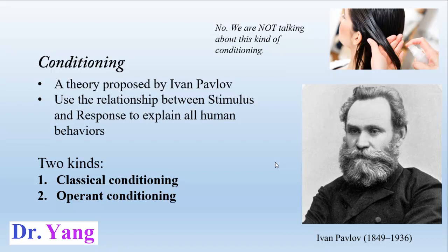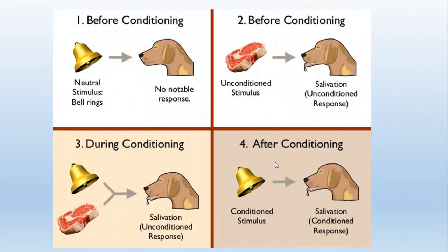I will talk about classical conditioning first. We usually use an example about a dog. If you present meat to the dog, the dog will start to salivate — it's a natural response, which is why we say the meat is an unconditioned stimulus. Every time you present the meat, the dog will salivate, so salivation is unconditioned too, because this relationship is very natural.